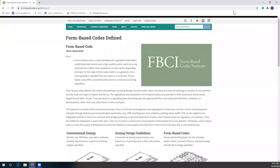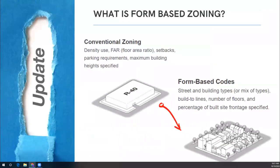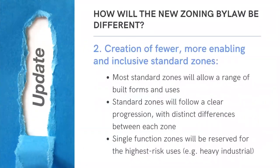Sorry if that video was a little bit grainy, but I think it does a good job of explaining how form-based zoning differs from conventional zoning and how a form-based code can help places that were planned using conventional zoning really transform. So the new bylaw will also feature fewer, more enabling and inclusive zones. This means the new bylaw will allow a range of built forms and uses in most standard zones. Standard zones will follow a clear progression with distinct differences between each zone. Single function zones will be reserved for the highest risk uses that have the potential for greater land use impacts, such as heavy industrial uses.